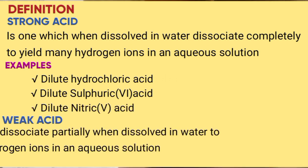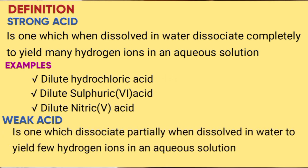A weak acid is one which dissociates partially when dissolved in water to yield few hydrogen ions in an aqueous solution. Examples include acetic acid and methanoic acid.